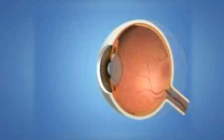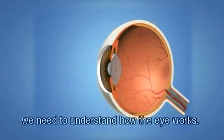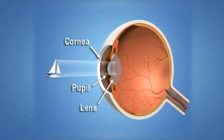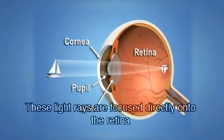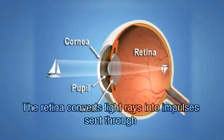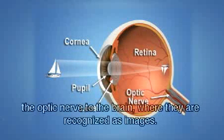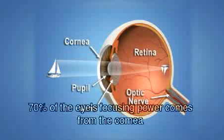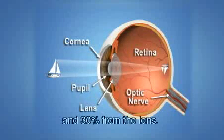To understand how we see clearly, we need to understand how the eye works. Light rays enter the eye through the clear cornea, pupil, and lens. These light rays are focused directly onto the retina, the light-sensitive tissue lining the back of the eye. The retina converts light rays into impulses sent through the optic nerve to the brain, where they're recognized as images. 70 percent of the eye's focusing power comes from the cornea and 30 percent from the lens.